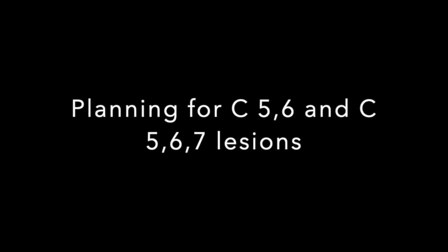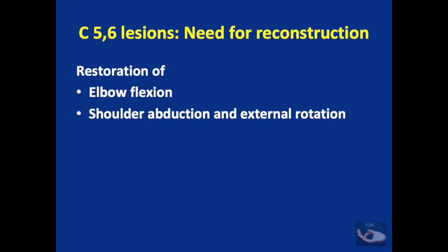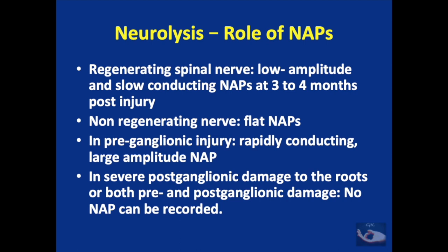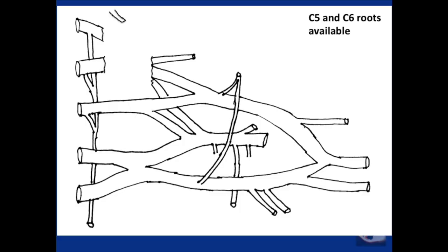For C5-6 lesions there are two goals: restoration of elbow flexion and restoration of shoulder abduction and external rotation. For C5-6-7 lesions the priorities are the same with the addition of elbow extension. When exploration reveals scarred nerves but electrical conduction across the nerve is confirmed by nerve action potentials, neurolysis yields good results. In postganglionic lesions where proximal root stumps are available, nerve grafting can be done.